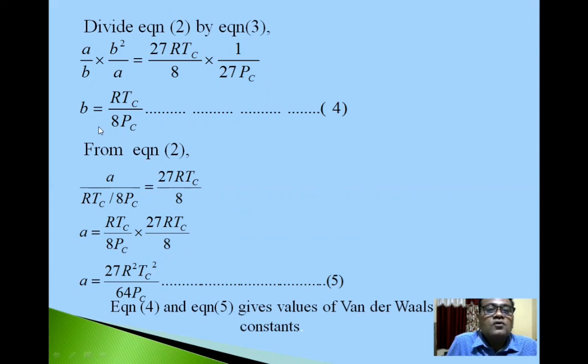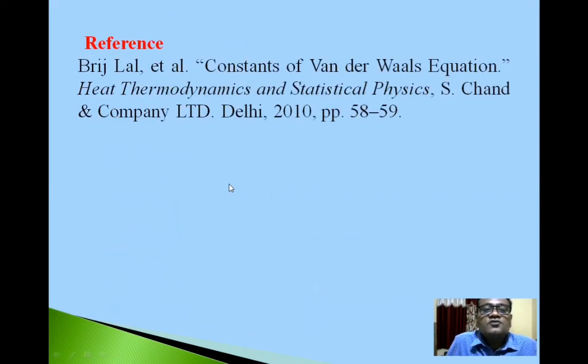Equation 4 gives value of b and equation 5 gives value of a. We use values of Van der Waals constants a and b. References are used for preparation of this presentation. Thank you.